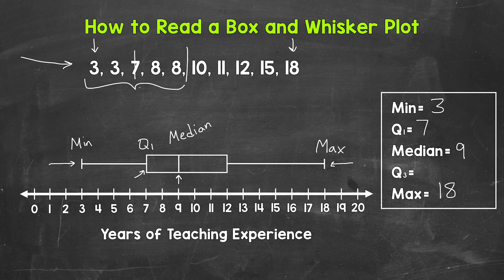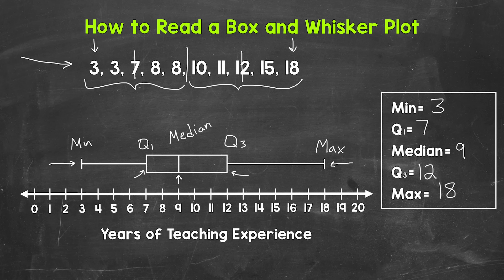Now we need to find the third quartile, the upper quartile. Let's take a look at the upper half of our data. We need to find the median — the midpoint of that upper half — which is 12. So 12 is our upper quartile, the third quartile. That's the three-fourths mark within our data, so the 75th percentile. The third quartile is 12, represented by this part of the rectangle.